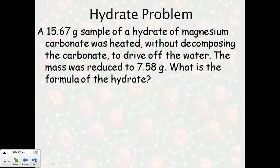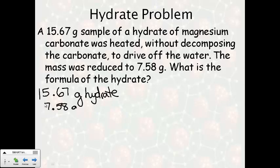So here's an example problem. You have 15.67 grams of the hydrate, so that's all together, so this is the whole thing. And then it's heated, and the water is driven off, and the mass is reduced to 7.58 grams. Now this is just the salt now, it's the magnesium carbonate salt. So to find how much water was lost, we would subtract. When we subtract, we get 8.09 grams of H2O.